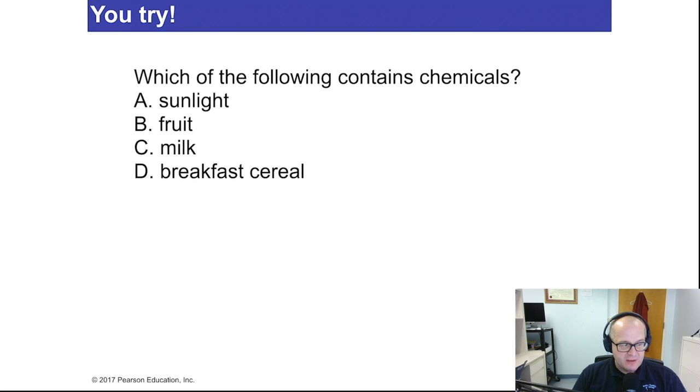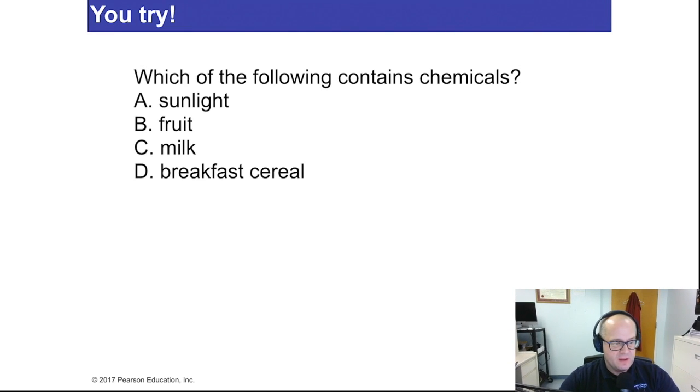Now, the last one on the list, sunlight. Well, sunlight actually doesn't contain any chemicals. Sunlight is a form of energy. And we're going to get into energy later on. So sunlight does not contain chemicals. It is simply a source of energy. Now, let's continue. Hope you did well on that. If not, please review. Make sure you understand what a chemical is and what a chemical isn't.